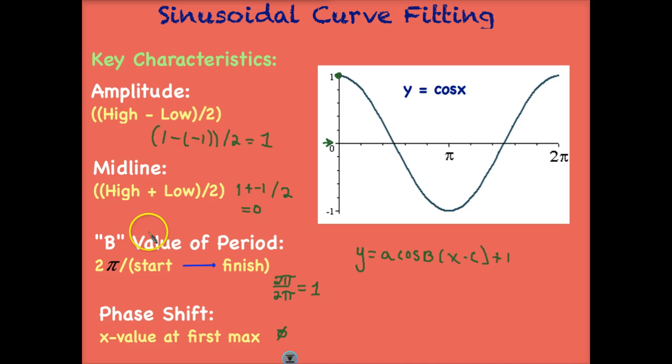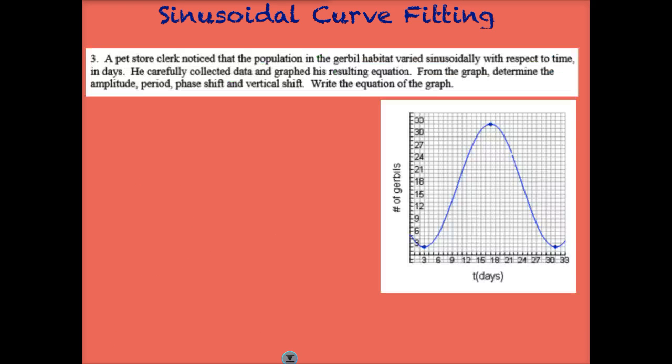We can use these key characteristics and how we find them in order to solve problems like this next one. A pet store clerk noticed that the population in the gerbil habitat varied sinusoidally with respect to time, in days. He carefully collected data and graphed his resulting equation. From the graph determine the amplitude, period, phase shift, and vertical shift, which is our midline. And we're going to write the equation of the graph. Why don't you pause the video and see if you can come up with these, and then we'll put them into an equation.